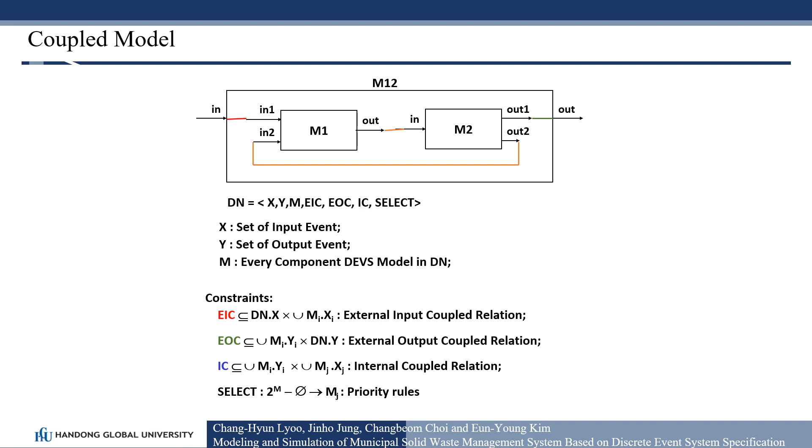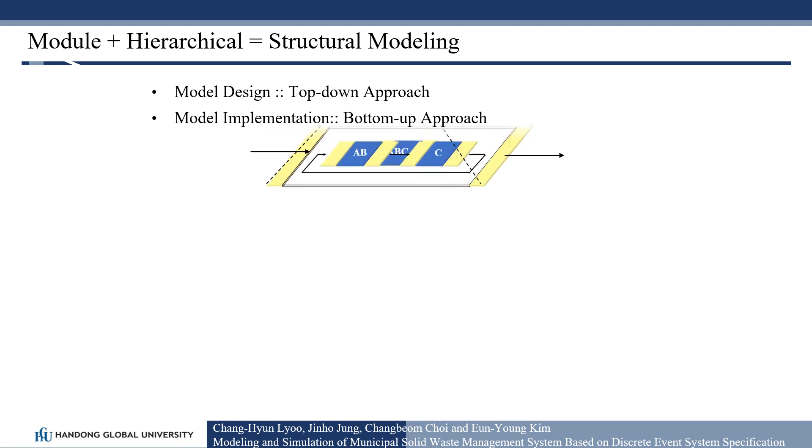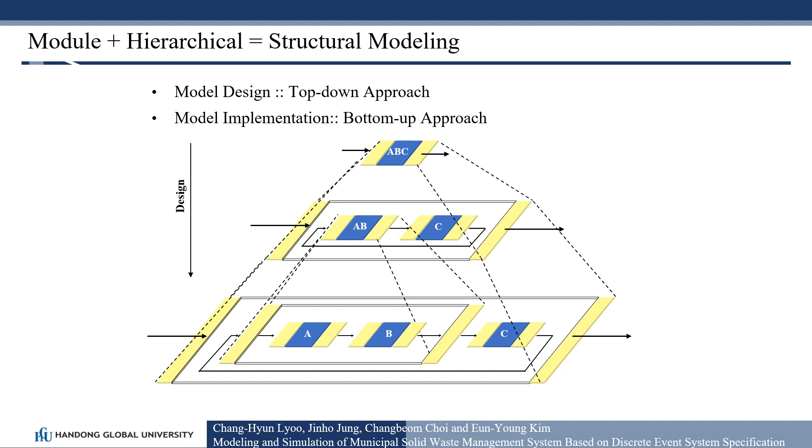M12 is a coupled model which is composed of atomic model M1 and M2. There are two coupling relationships between M1 and M2. Output port of M1 is connected to in port of M2 and out-to port of M2 is connected to in-to port of M1. So, by using this atomic model and coupled model, we can design the model with top-down approach, while implementation can be done with bottom-up approach, composing atomic models or other coupled models to compose a system.